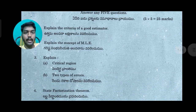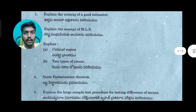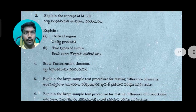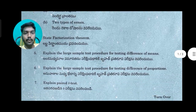The third question is to explain critical region and 2 types of errors, for 5 marks. The next question is to state the factorization theorem. The question wording may be the same thing — state factorization theorem — though there may be some difference in wording.